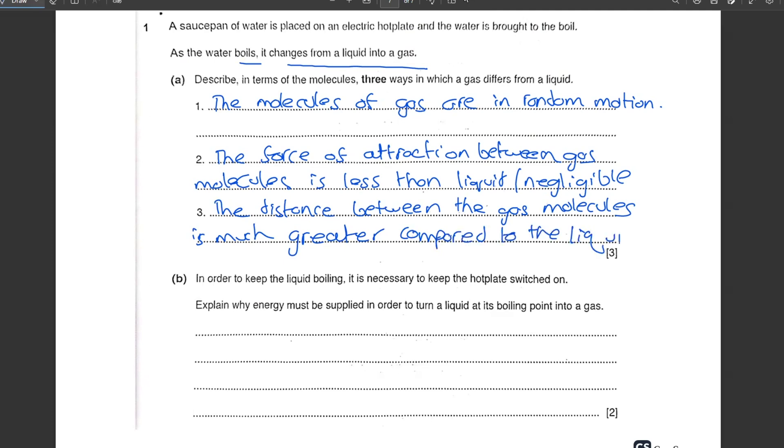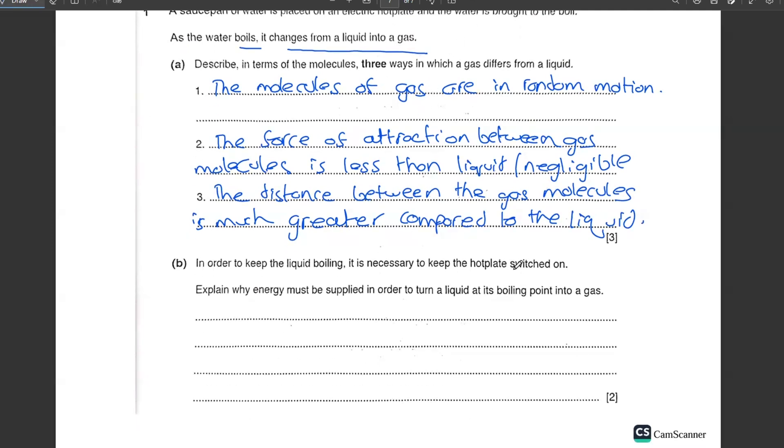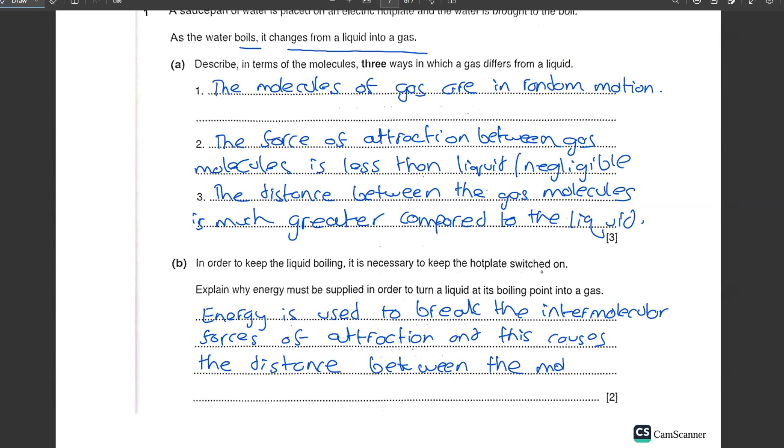Let's move on to the last question. In order to keep the liquid boiling, it is necessary to keep the hot plate switched on. Explain why energy must be supplied in order to turn a liquid at its boiling point into a gas. Energy is used to break the intermolecular forces of attraction. This causes the distance between the molecules to increase. Simple as that.